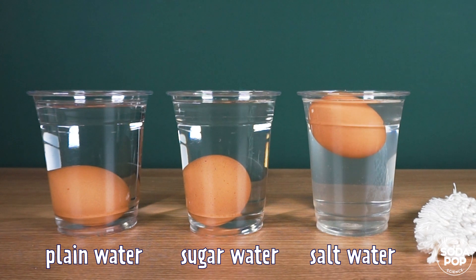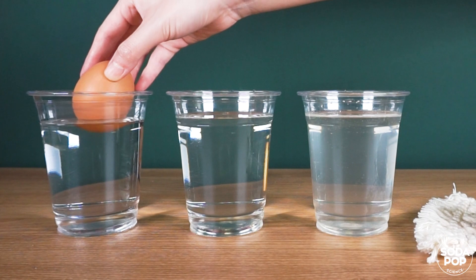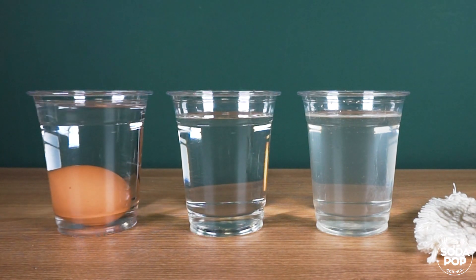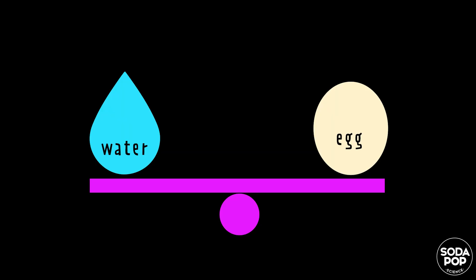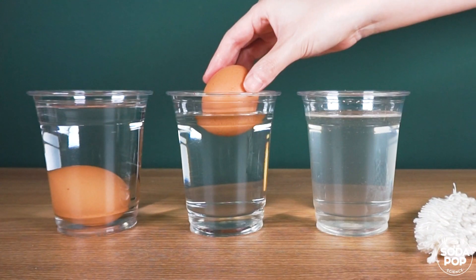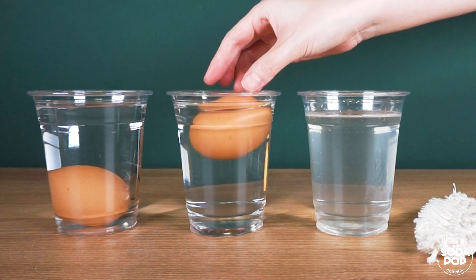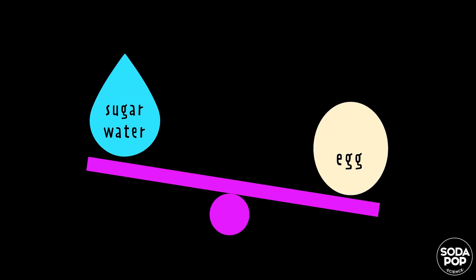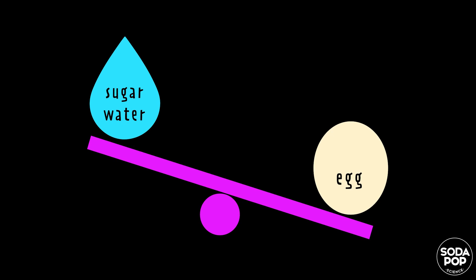Now let me tell you how and why this science activity works. An egg sinks in water because an egg is more dense than water. More dense means it is more crowded and heavier. Same as plain water, the sugar water was not dense enough to make the egg float.